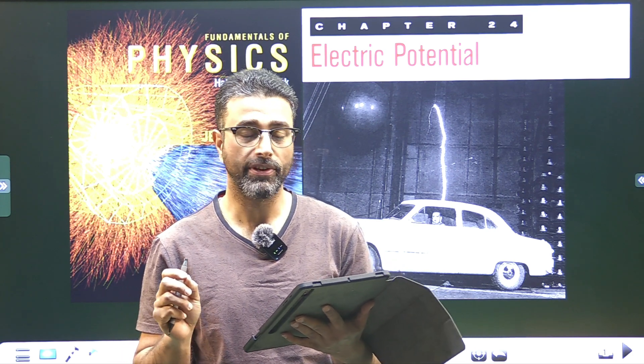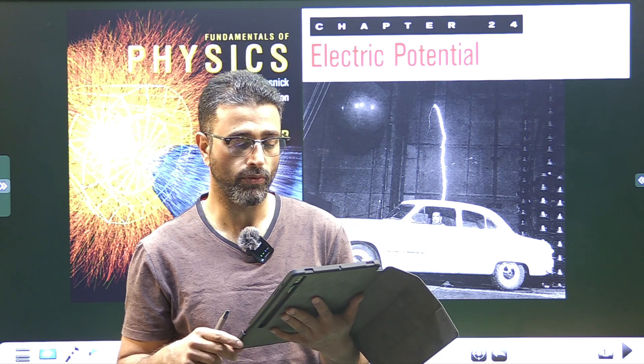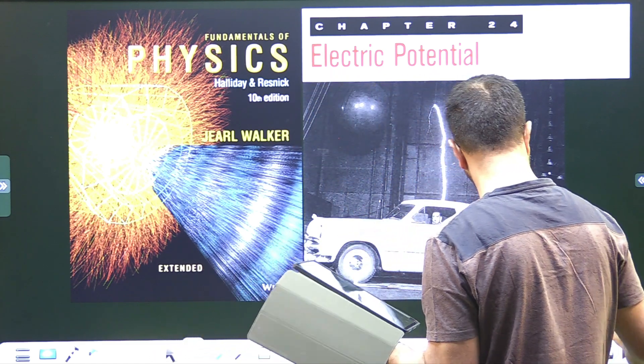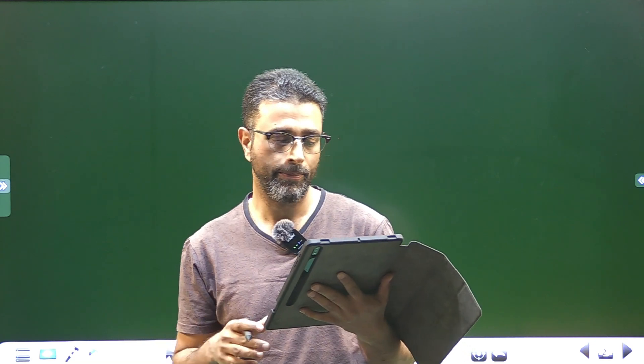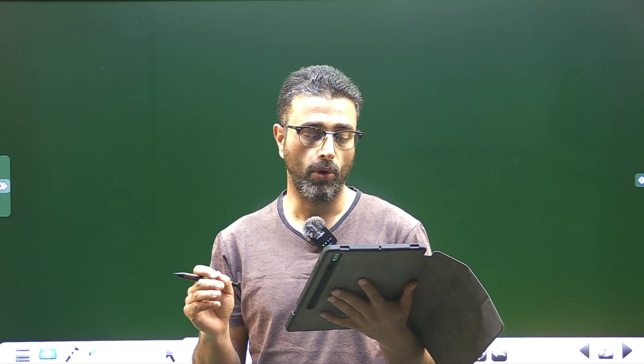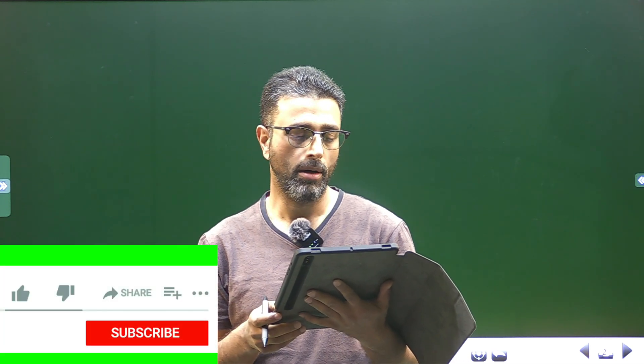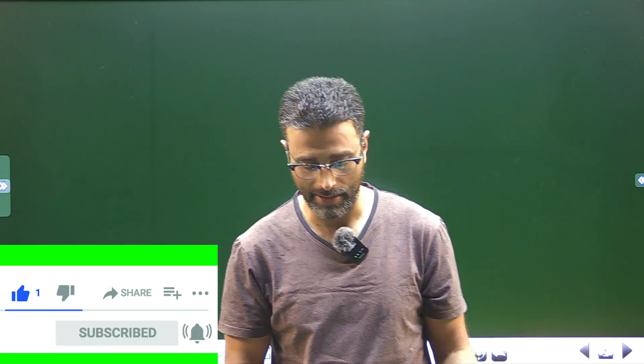The electric potential difference between the ground and a cloud in a particular thunderstorm is 1.2 into 10 to the power 9 volts. So potential difference is given between the cloud and the ground. In the unit electron volts, what is the magnitude of change in the electric potential energy of an electron that moves between the ground and the cloud?